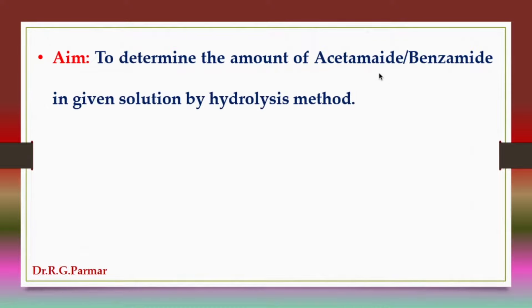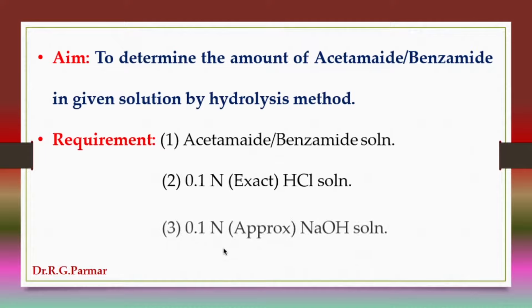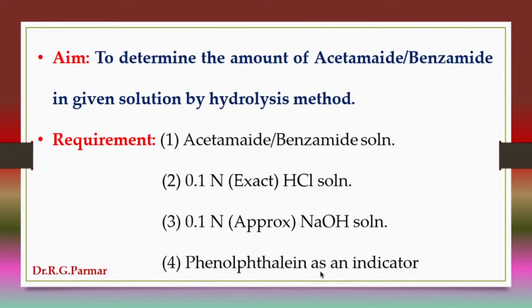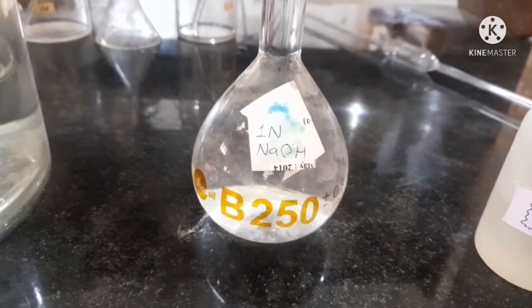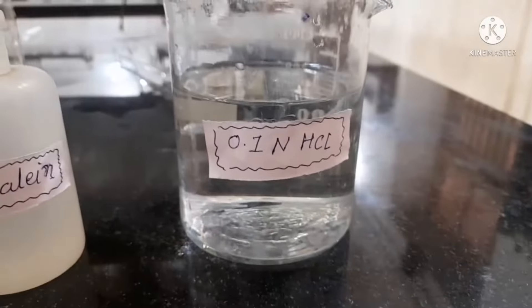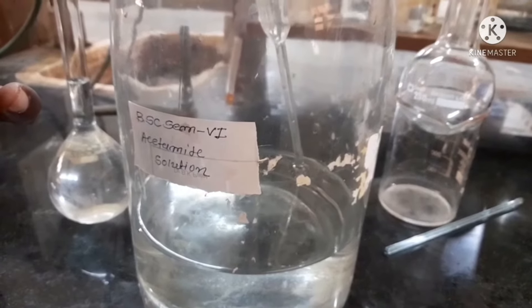The requirements are: acetamide or benzamide solution for hydrolysis, 0.1 normal exact HCl solution, 0.1 normal approximate NaOH solution, phenolphthalein as an indicator, acetamide solution, 1 normal NaOH solution, phenolphthalein as an indicator, and 0.1 normal HCl.